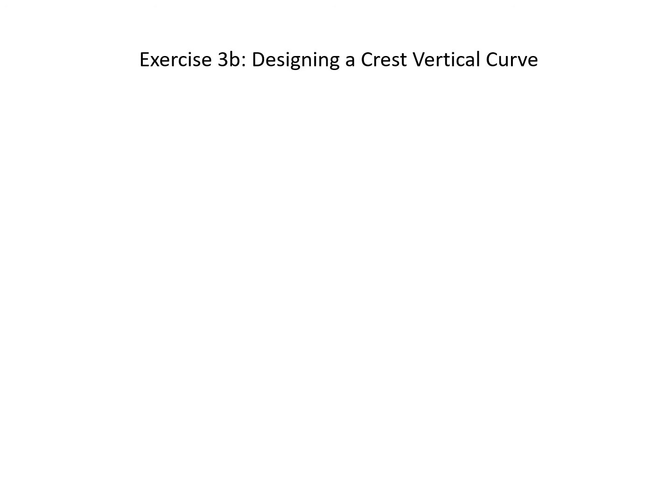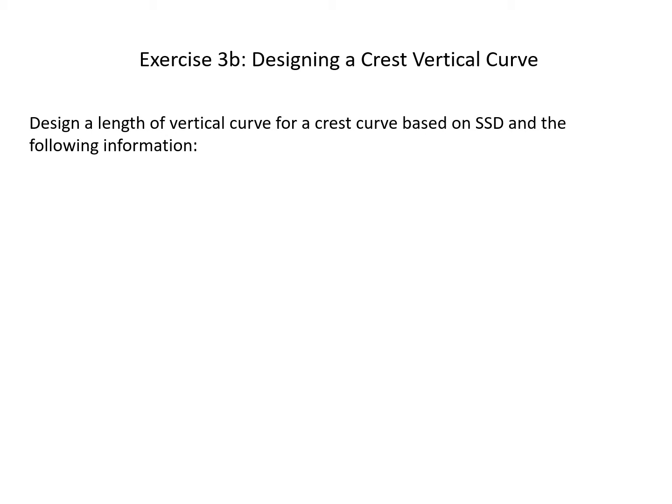Exercise 3B: Designing a Crest Vertical Curve. Design a length of vertical curve for a crest curve based on stopping sight distance and the following information. We have a design speed of 40 miles per hour, a grade 1 of 1.25%, and a grade 2 of negative 2.75%.